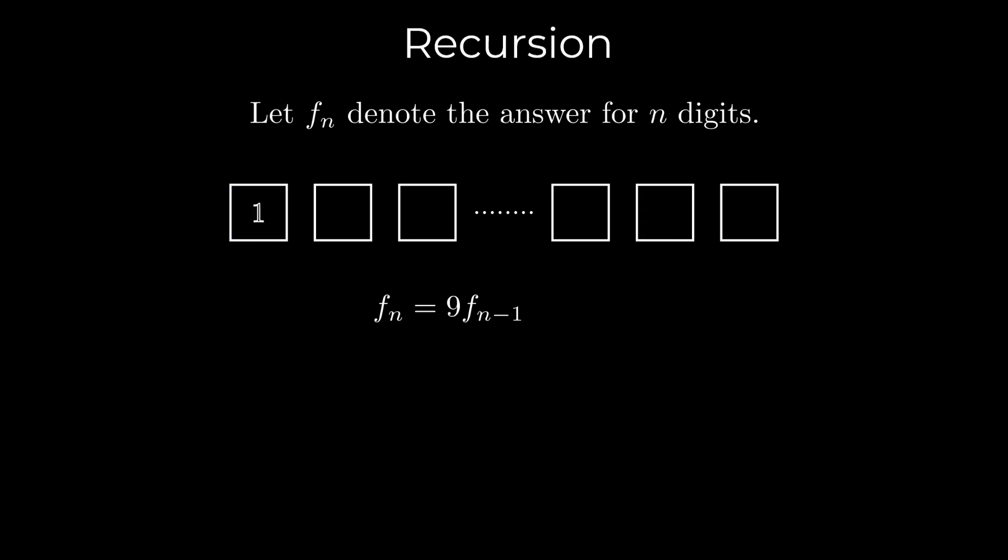Alright, what if the first digit is 1? Then the second digit can be any number except 1, giving us 9 possible choices. In this case, the problem reduces to n minus 2 digits, and hence this case contributes 9 times fn minus 2 to the total. So we have this recurrence relation.